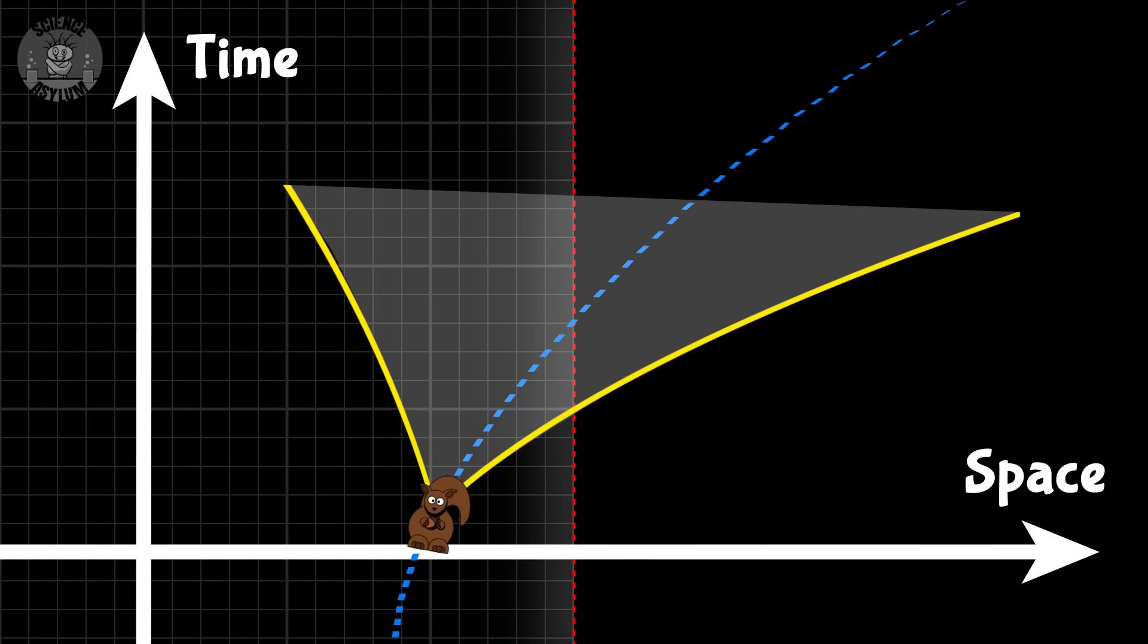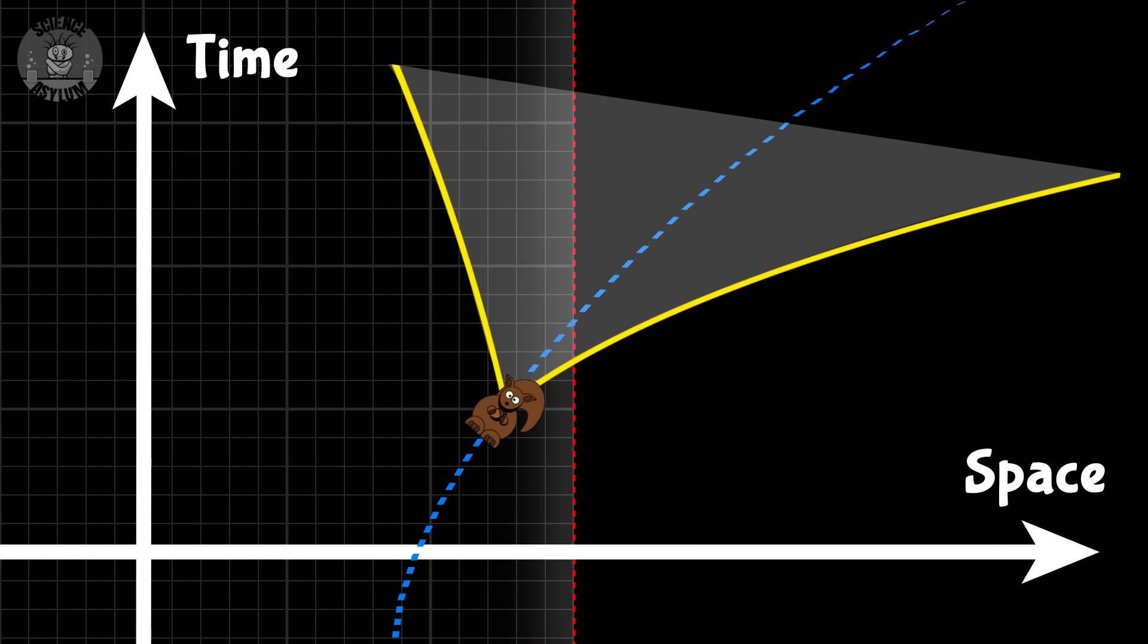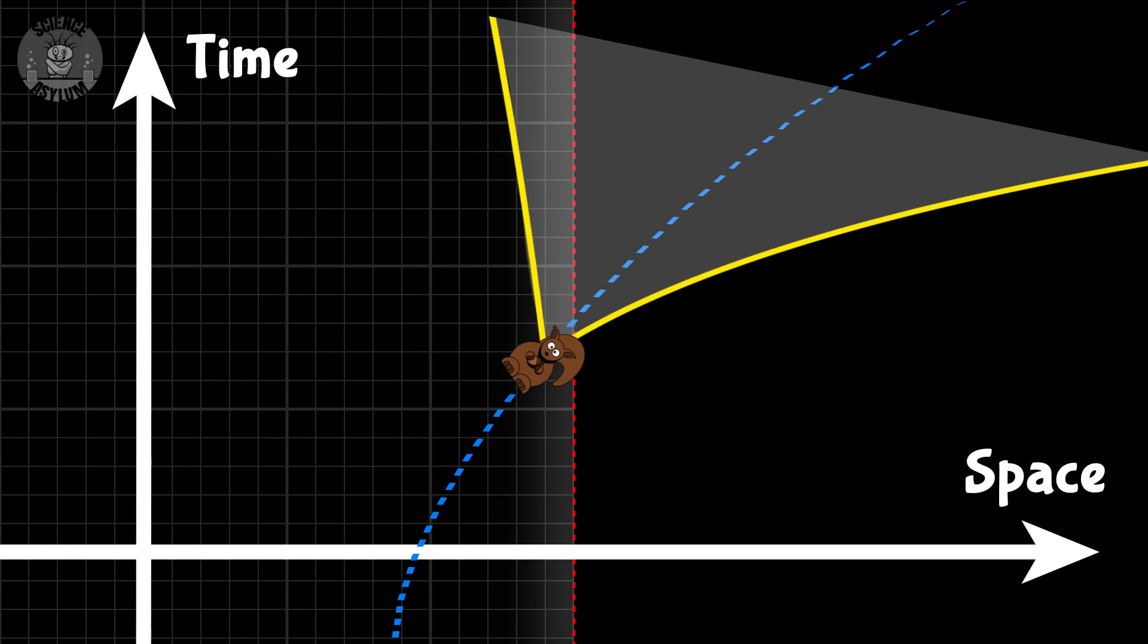It isn't being pulled in. It just goes in because that's where its future goes. This is taken to the extreme at the event horizon. Before the squirrel crosses the horizon, there are still some possible futures that would allow it to escape. It would just have to accelerate really hard.